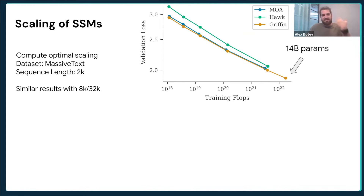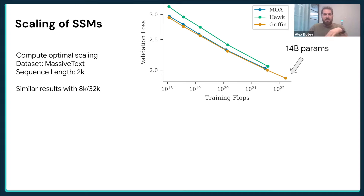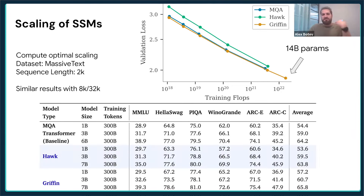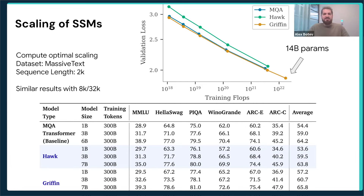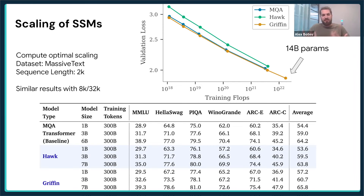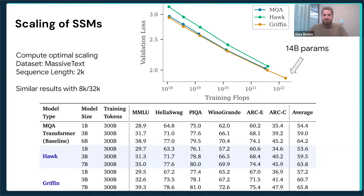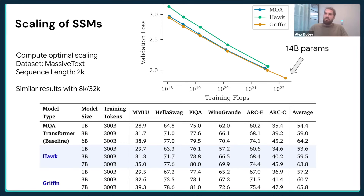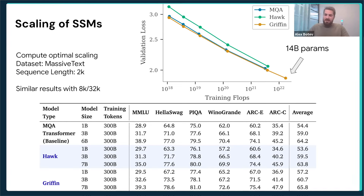These results are based on sequence length of 2K, and we have very similar results for sequences of 8K and 32K as well. Downstream evaluations show that these models not only have the same training scaling laws, but also achieve similar performance on downstream evals. There are caveats: in certain tasks they're slightly better, in certain tasks slightly worse. In math and tasks requiring more reasoning, they struggle a little more than global attention models, while in other tasks they're slightly better. On average, they perform essentially the same.